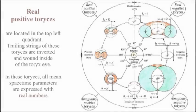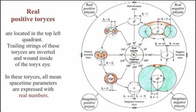Real positive Toreases are located in the top left quadrant. Their trailing strings are inverted and wound inside of the Torek's eye. In these Toreases, all mean spacetime parameters are expressed with real numbers.